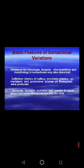Looking at the basic features of somaclonal variation: variation in karyotype, isoenzyme characteristics, and morphology of somaclones may be observed. Somaclonal variations are exactly located in the karyotype. Karyotype is nothing but a photograph of the chromosomes, so these variations might be observed in chromosome number and chromosome shape.